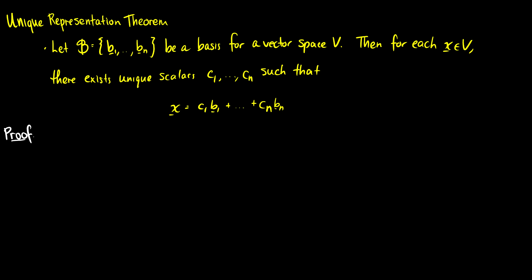What this means is that we can represent a vector in terms of the vectors in the basis. For the proof, we already know that a basis spans the vector space, so we know scalars exist that can represent any vector — but we need to prove they're unique. We'll assume x has two different representations and then show that they're actually the same.